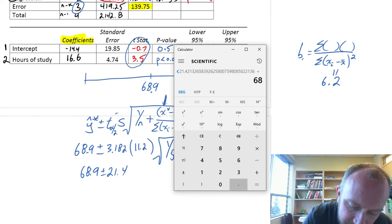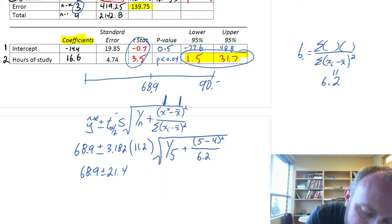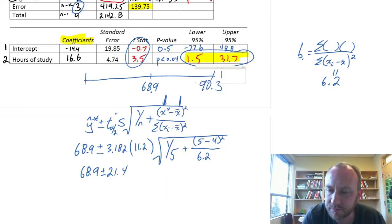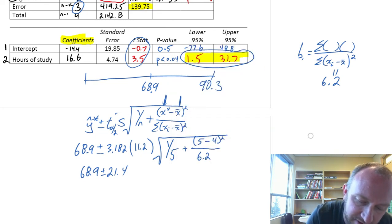Plus 68.9, so that upper limit is 90.3. And our lower limit, 68.9 minus 21.4, is 47.5.